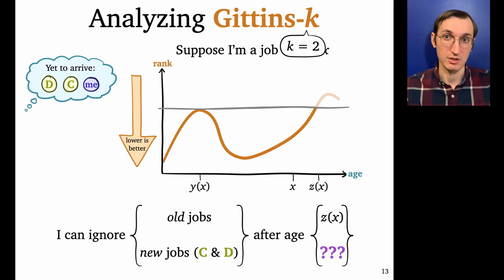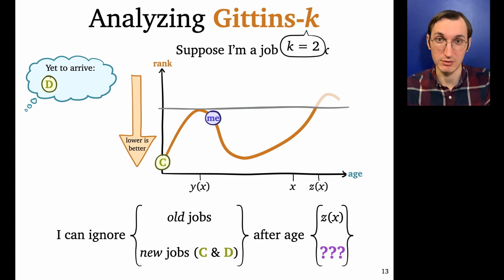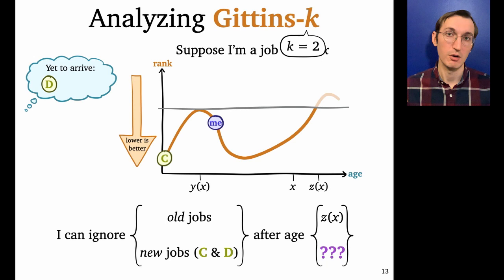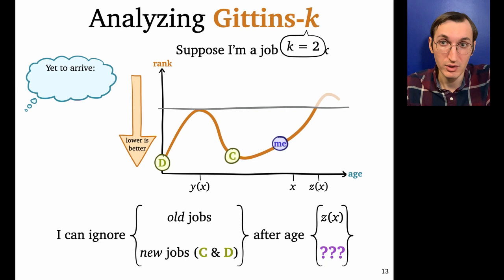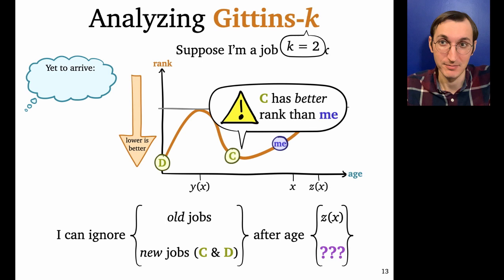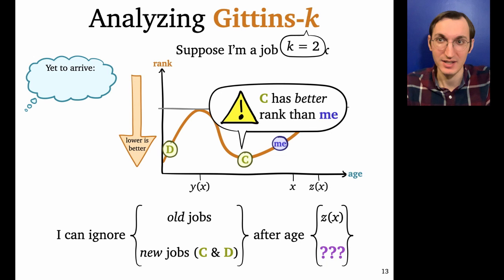So in my example, I'm going to arrive first, I'm going to receive some service, and then a new job C will arrive. Now at this point, there are two jobs in the system and k equals two servers. So we both get service. Cool. And now maybe D arrives. Okay. So at this point, the two jobs of best rank get service. That's job D and job C. C has better rank than me. So it and D get to be in service. And notice what just happened.